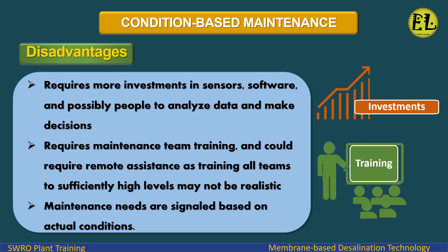Disadvantages include: requires more investment in sensors, software, and possibly people to analyze data and make decisions. It also requires maintenance team training, and could require remote assistance, as training all teams to sufficiently high levels may not be realistic. Maintenance needs are signaled based on actual conditions.